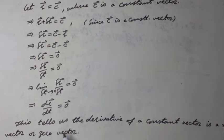Note it. This tells us the derivative of a constant vector is a null vector or 0 vector.